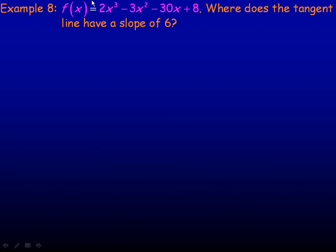In example 8, we're given this function and asked where does the tangent line have a slope of 6. Well, the tangent line slope is the value of the derivative if you put any number in place of x. So I'm going to find the derivative of this. It's a polynomial function, has 4 different terms, so we'll differentiate each one.